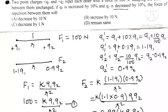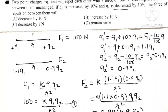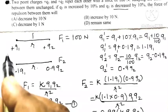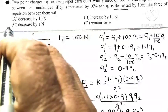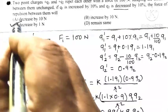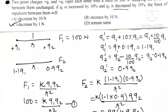Looking at the four options, option C states that the force of repulsion decreases by 1 Newton, so option C is the correct answer for this question.